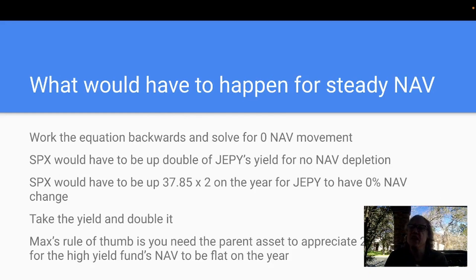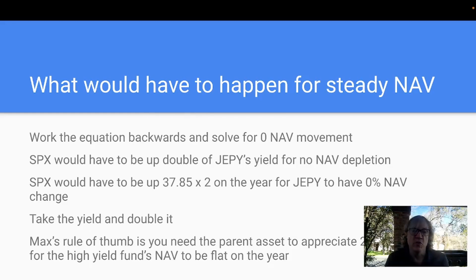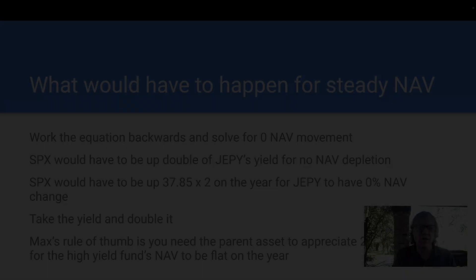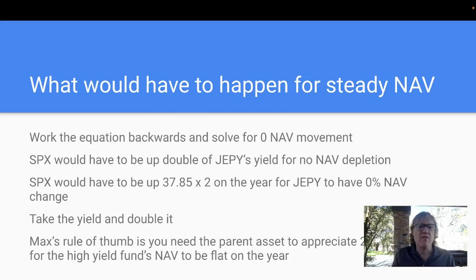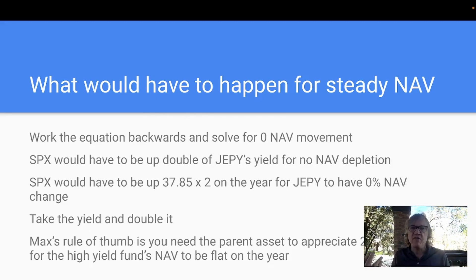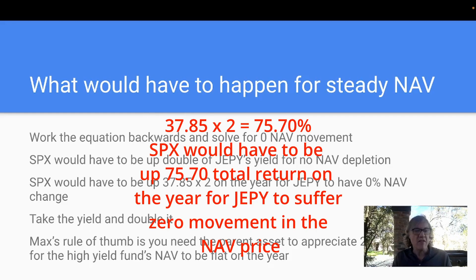What I was thinking last night is: let's work this equation backwards and solve it for zero NAV movement. In other words, let's see what it would take to have no NAV movement. SPX would have to be up 37.85% — which is the dividend JEPI pays. The underlying would have to be up at least twice that much, because JEPI on a total return basis only gets half of whatever the parent gets total return-wise. So when you back out the dividend, they need to make at least that dividend. To be at 0% NAV for the year, the SPX would have to be up 37.85 times 2 for JEPI to have zero NAV movement.